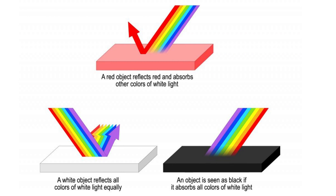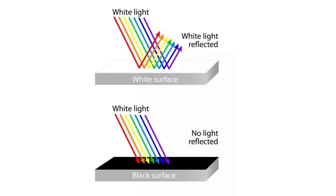The energy of light: when light is absorbed by an object, its energy is converted into heat. Darker colors such as black absorb more light energy compared to lighter colors like white. The absorbed energy causes the object's temperature to rise as the molecules within the object gain kinetic energy.